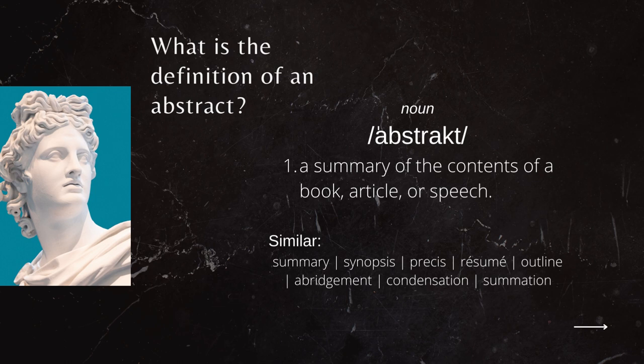I wanted to give you the actual definition of the term abstract with regard to writing. According to Oxford Dictionaries, it is a summary of the contents of a book, article, or speech. Within the academic environment, we're really looking at the summary or condensing of your research project or research in general — not necessarily just your honours, masters, or PhD, but also side projects or completed degrees. Similar words include synopsis, resume, outline, abridgment, condensation, or summation. Overall, it's a small paragraph that allows the reader to know what your research is about and understand its significance.